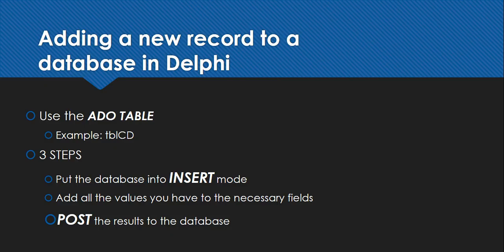You don't need to put the pointer anywhere or go to the last record — it will automatically go to the last place in the database and create almost like a blank spot for your new values to go in. That's what insert mode will do. Then you can put in the values into the necessary fields. You don't have to fill all the fields, only the required fields and a suitable primary key value — we'll talk about that later. Once done, you must post the results.